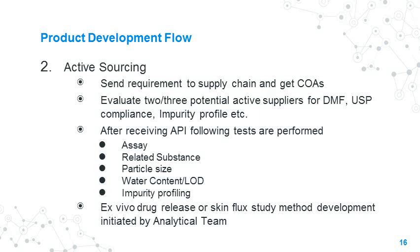The R&D team calculates the amount of API needed for development, scale-up, and exhibit patches, and sends the request to supply chain for procurement. The supply chain identifies a few suppliers and arranges sample quantities and certificates of analysis for evaluation. Two to three potential active suppliers are evaluated for drug master file, USP compliance, and impurity profile. The API supplier is usually chosen by R&D, and API lots are procured by supply chain. After receiving the API, assay, related substances, particle size, water content, LOD, and impurity profiling are performed on the API lots.